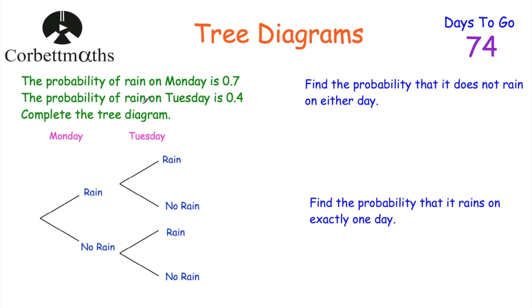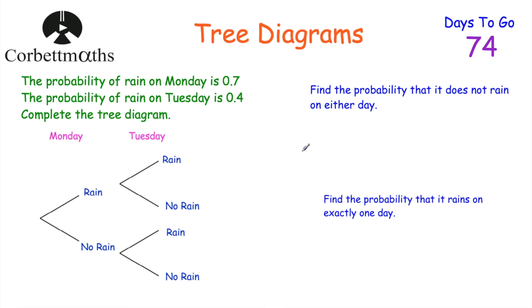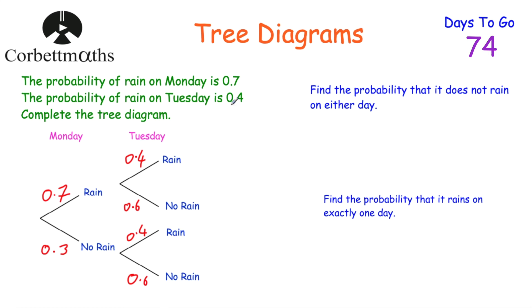Now here's a tree diagram question for you to try. The probability of rain on Monday is 0.7 and the probability of rain on Tuesday is 0.4. Complete the tree diagram and answer the probability questions. So: probability of rain on Monday is 0.7, no rain is 0.3. On Tuesday, probability of rain is 0.4 and no rain is 0.6 — and the same for Tuesday's second branch.